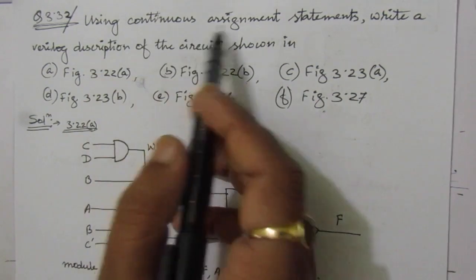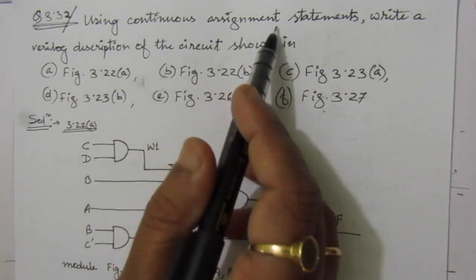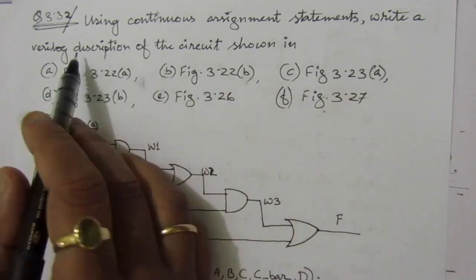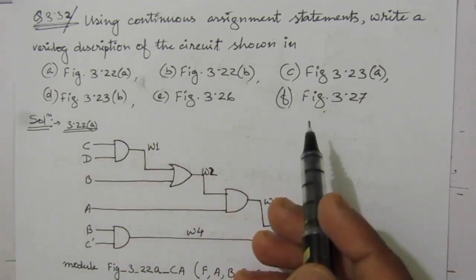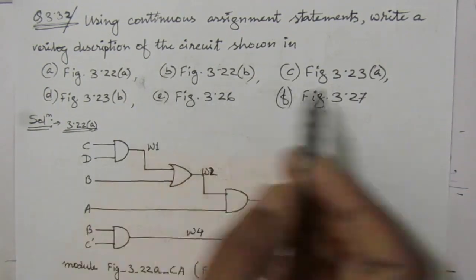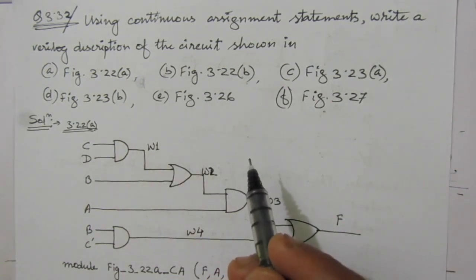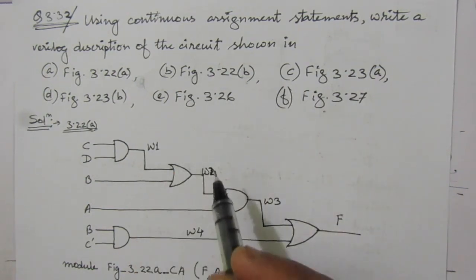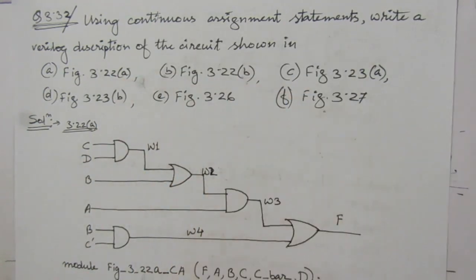The problem is to use continuous assignment statements and write a Verilog description of the circuits shown in these figures. We are given with 6 figures. These figures are similar to the previous problem, but in the previous problem we had to write the gate-level description. Here we have to use continuous assignment statements.